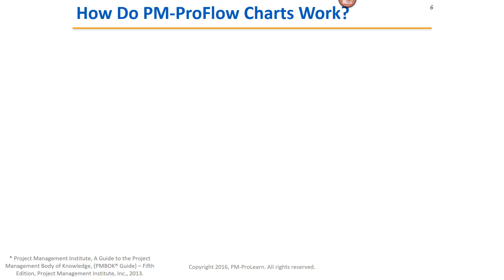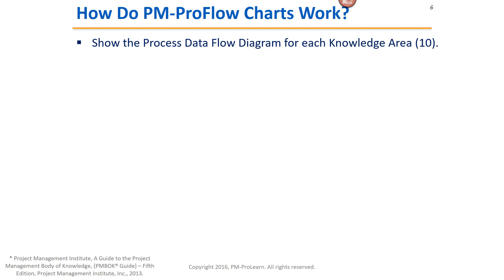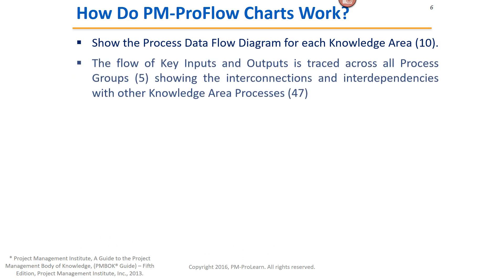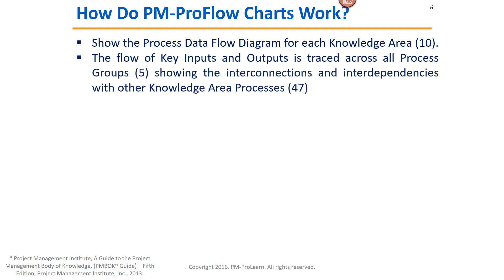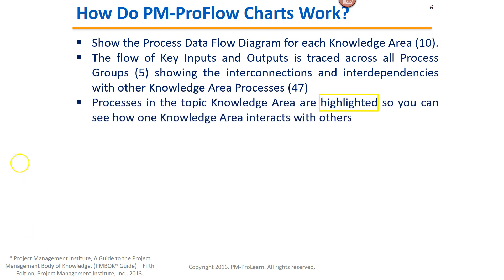And here's an example. So how do those PMProFlow charts work? They show you the process data flow diagram for each knowledge area, and there's 10 of them. The flow of all the key inputs and outputs is traced across all five process groups, showing you the interconnections and interdependencies with the other knowledge area processes — 47 total processes shown across these 10 flow charts. Processes in the topic knowledge area are highlighted so you can see how one knowledge area interacts with others.